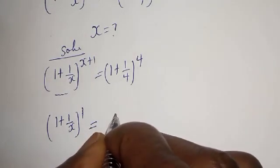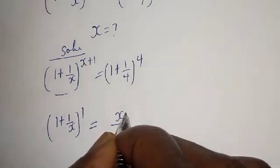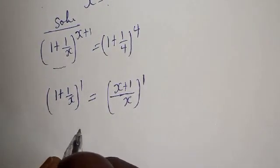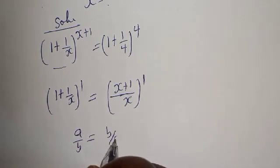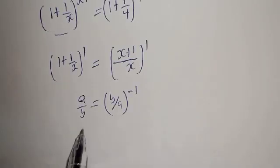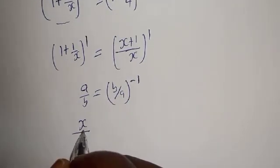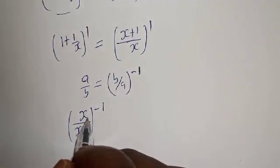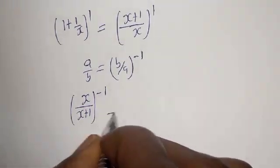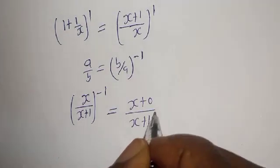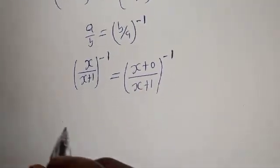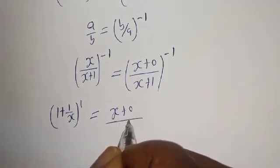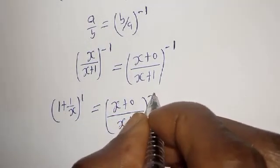This is equal to s plus 1 over s, to the power of 1. And if you have a over b, this is equal to b over a, to the power of minus 1. This can be written as s over s plus 1, to the power of minus 1. So 1 plus 1 over s, to the power of 1, is equal to s over s plus 1, to the power of minus 1.